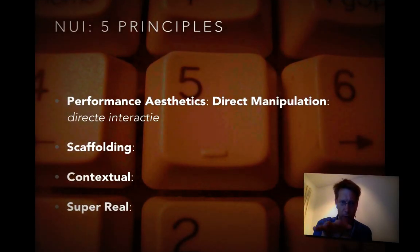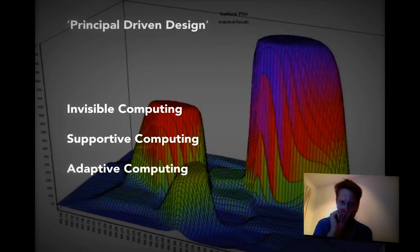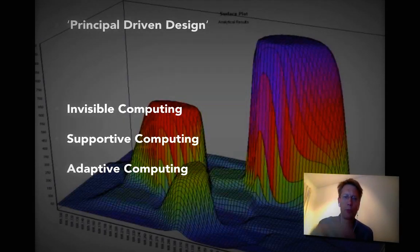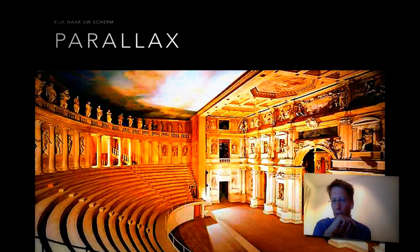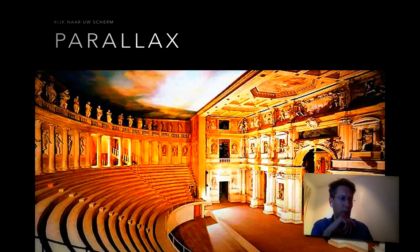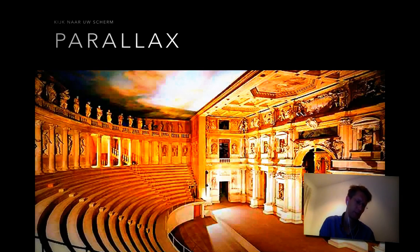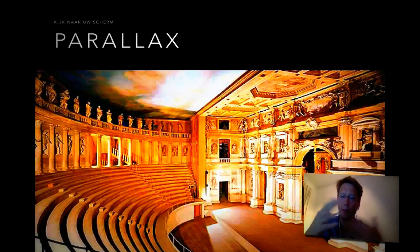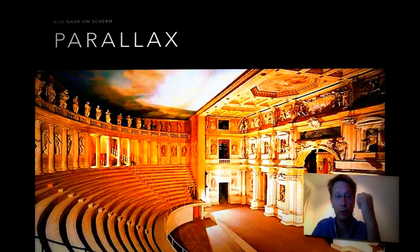So we looked at the five principles — they're here. Contextual is an important one I think, and it also relates to principle-driven design. It's invisible computing, it's supportive computing, and it's adaptive. For example, it can be very, very natural. A form that I really like is: if you move your iPhone, you see that the background is moving faster or slower than the foreground, and hence you have some parallax effect. It's also a form of natural user interface, often overlooked.